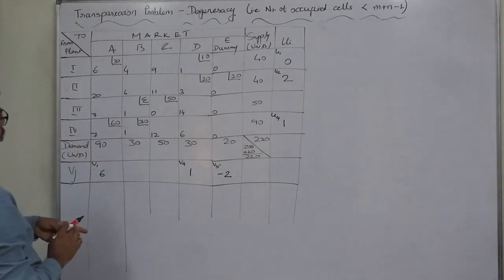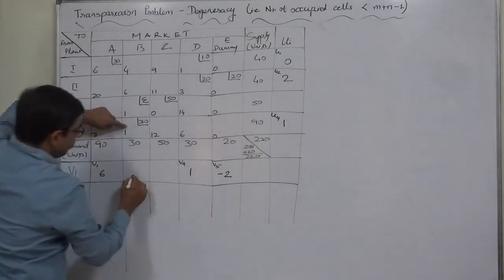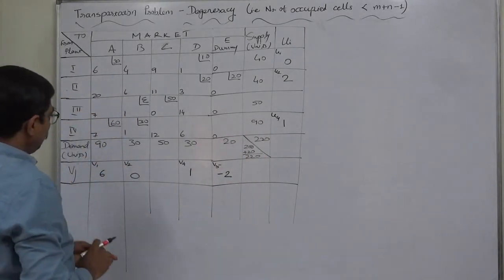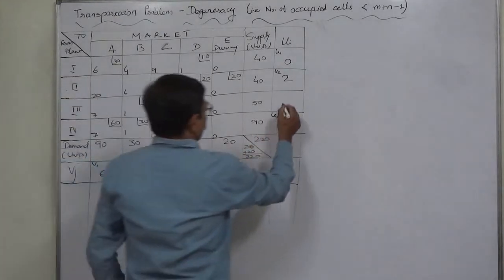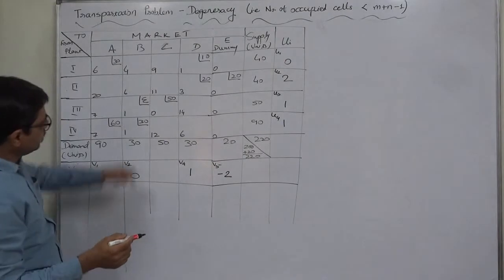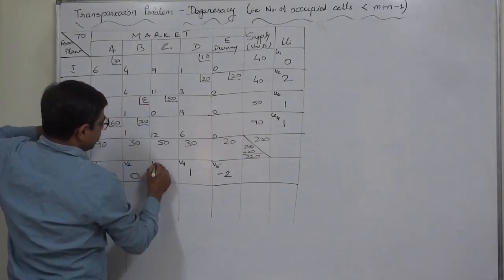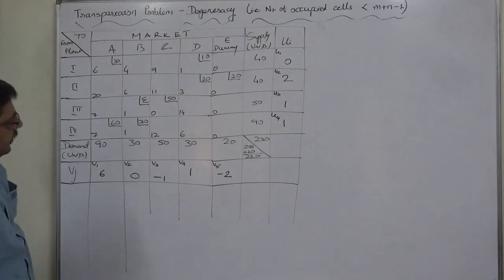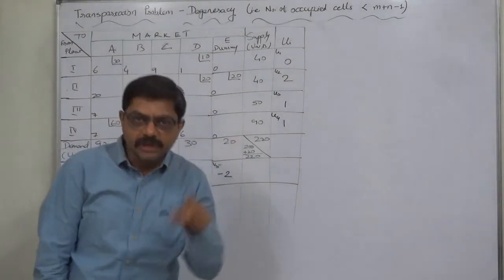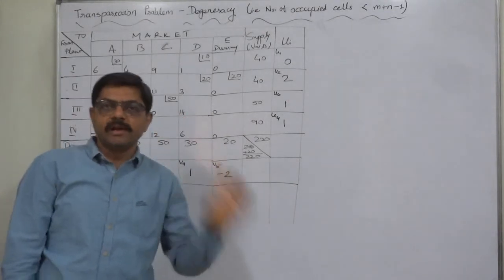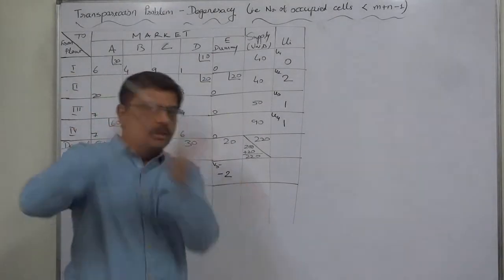On the basis of those cells, using C1 minus U, V2 = 0. Then for the next occupied cell, C1 minus V gives U3 = 1 — wait, that is U for row 3. And using that U value with the next occupied cell, C0 minus U gives V3 = minus 1. This shows the importance of substituting epsilon in an unoccupied or empty cell — only after that can we write all UI and VJ values, as discussed in Part 1.